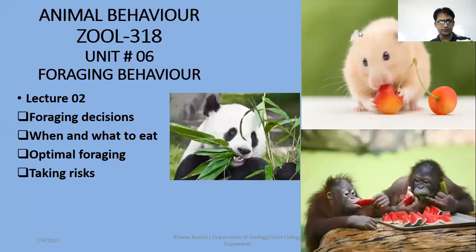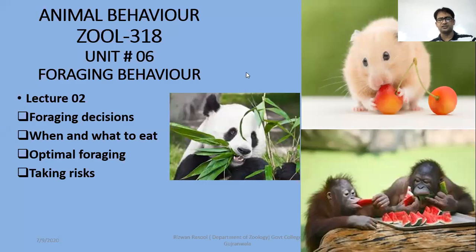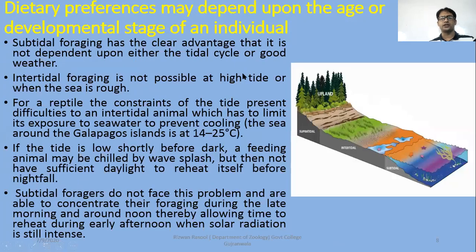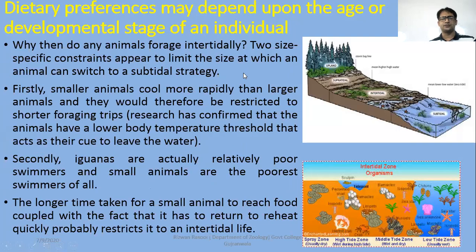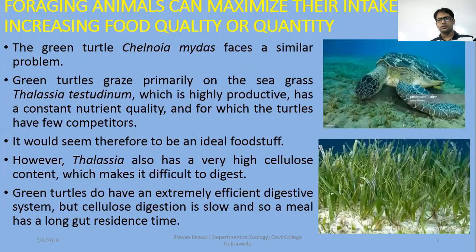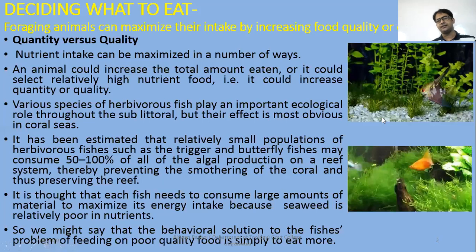Today we are going to focus on two portions in the slides: optimal foraging and risk-taking by animals during foraging. In the first part of foraging decisions, we discuss how animals decide which food they are active for foraging. We have discussed this with examples of iguana, butterfly fish, and green turtles.